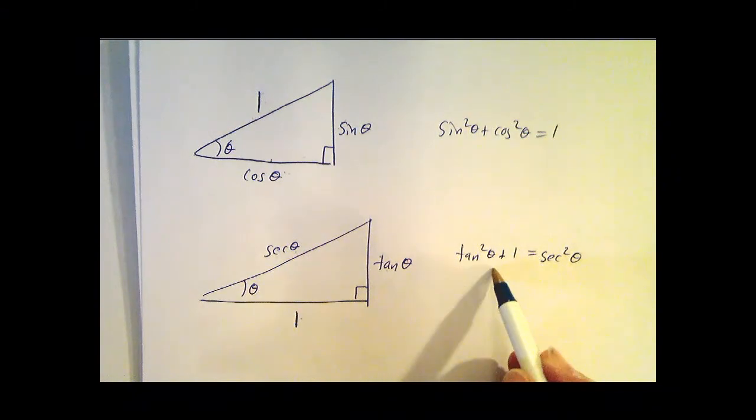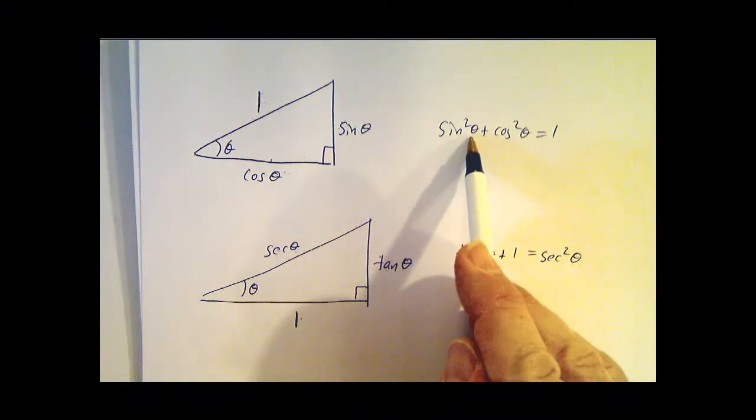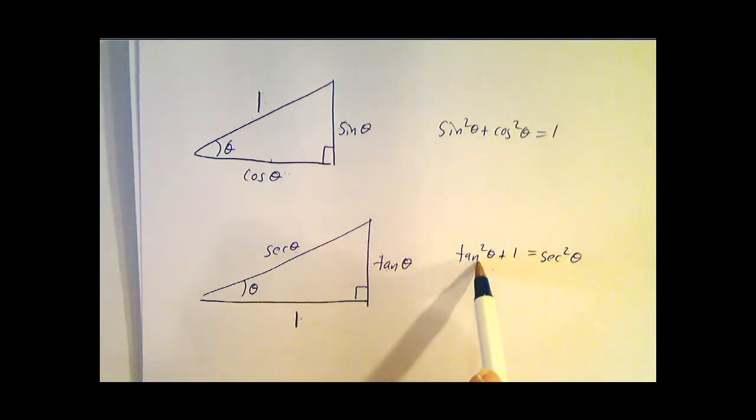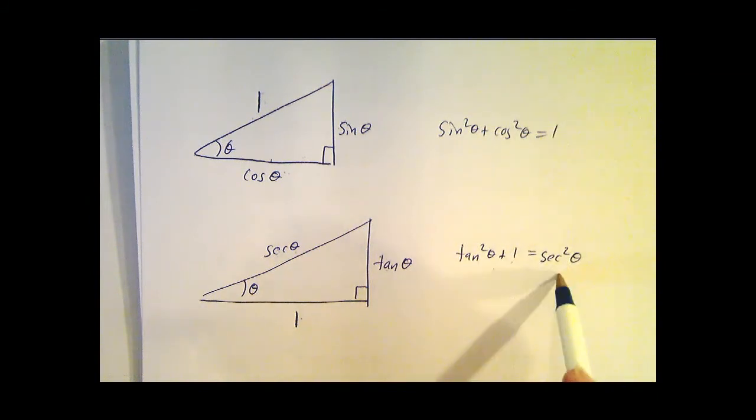Tangent squared theta plus 1 equals secant squared theta. You can also get this by taking this equation and dividing by cosine squared theta. Sine squared divided by cosine squared is tangent squared. Cosine squared divided by cosine squared is 1, 1 divided by cosine squared is secant squared.